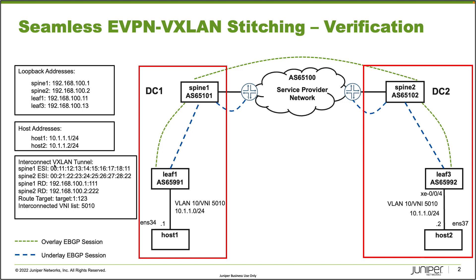We also have the interconnect VXLAN tunnel parameters. The ESI configured on Spine1 follows a 1.1, 1.2, 1.3, 1.4 pattern, and Spine2's ESI follows a 2.1, 2.2, 2.3, 2.4 pattern — making it easy to recognize which interconnect ESI belongs to which spine. The route distinguishers for Spine1 and Spine2 are based on their loopback IPs. The interconnect route target is target:1:123, and we have the interconnect VNI shared across the interconnect VXLAN tunnel. Let's jump to the CLI.